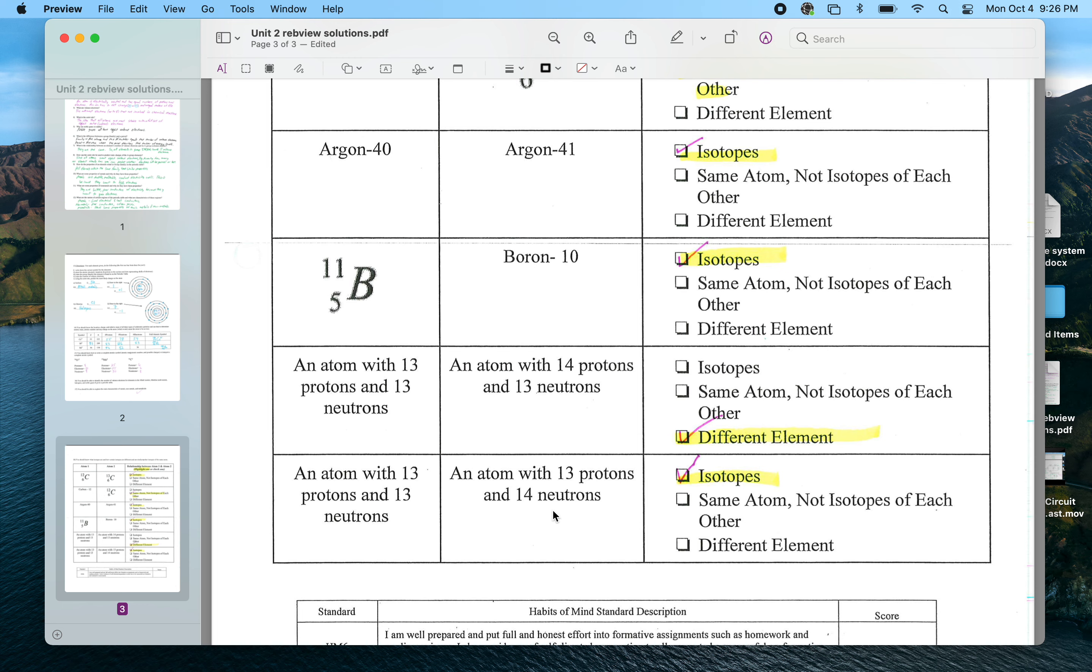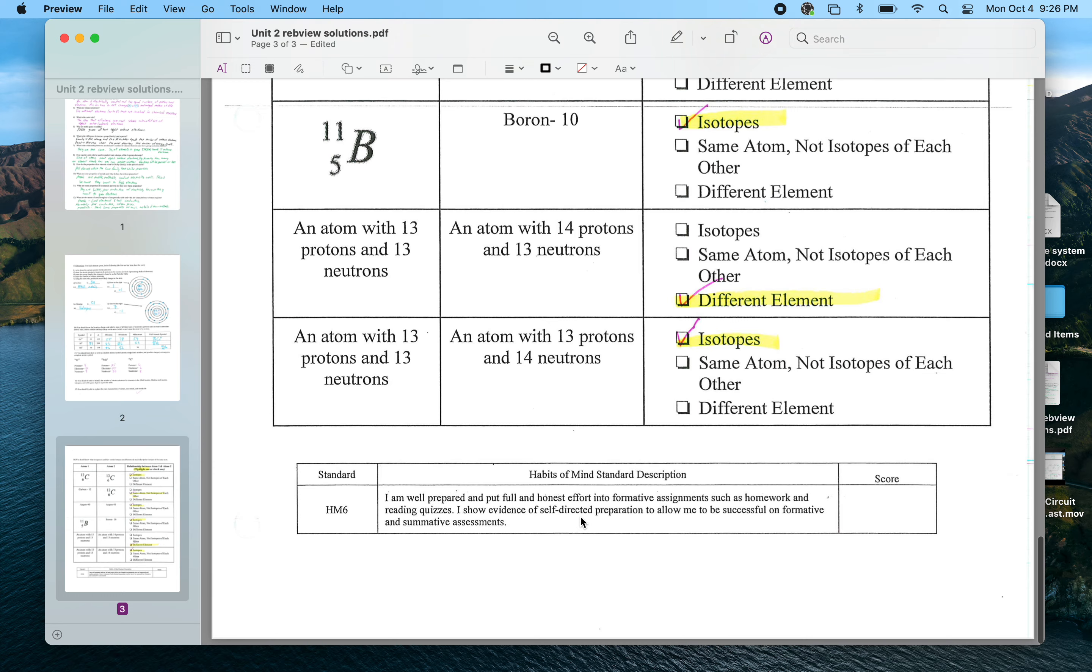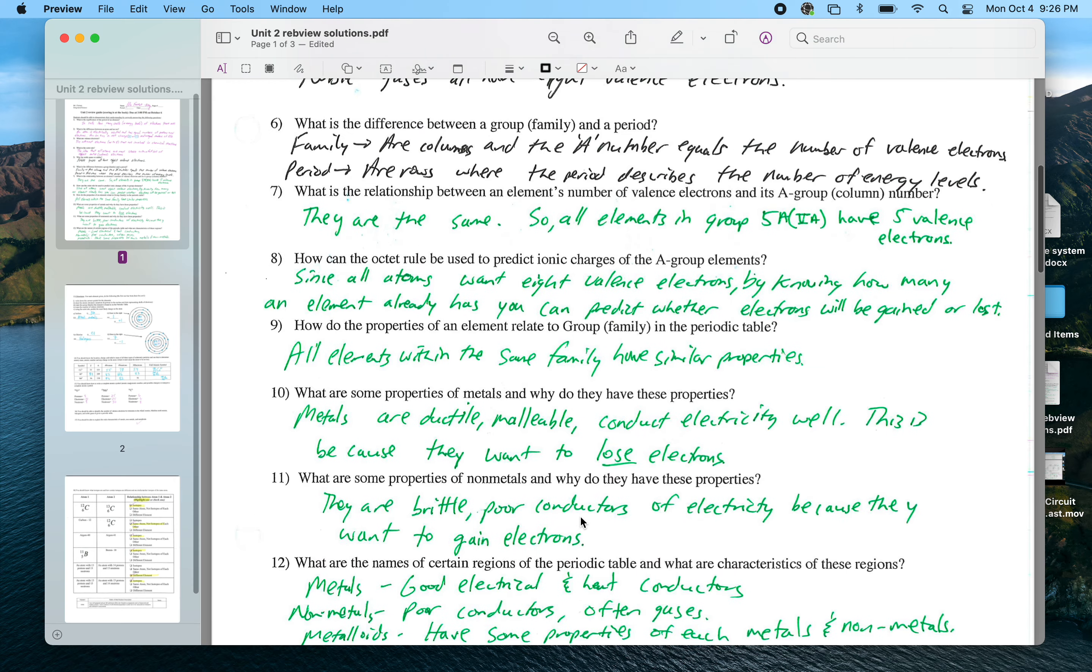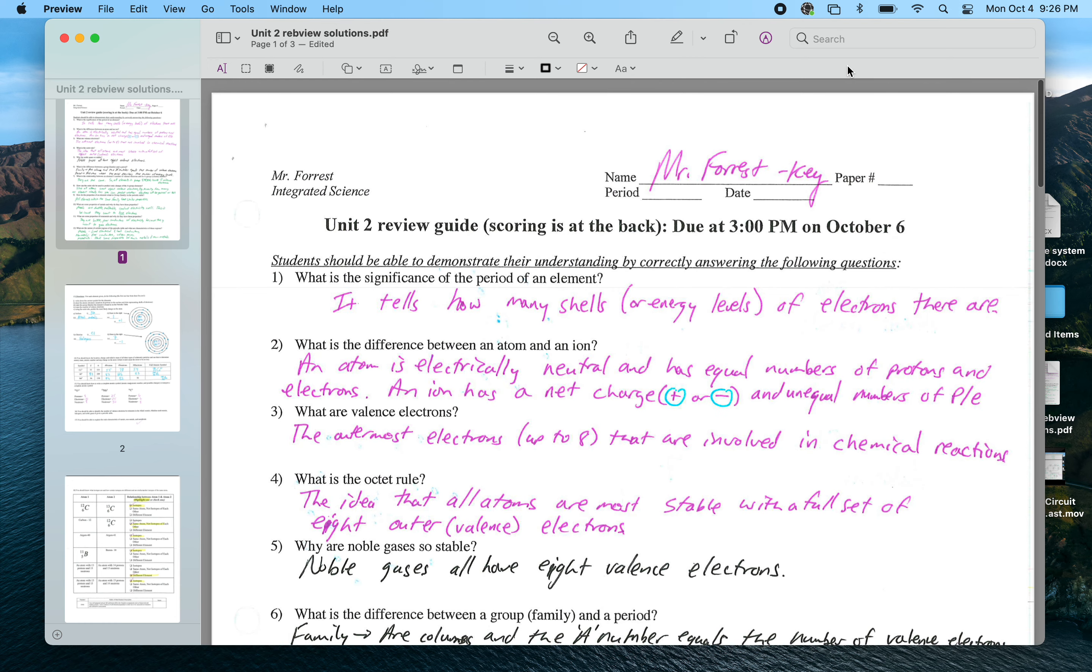This atom with 13 protons and 13 neutrons compared to an atom with 13 protons and 14 neutrons - by definition, the number of protons defines the element, so these are both the same element, but they have different numbers of neutrons, so different masses. And therefore, they are isotopes of each other. These are two isotopes of aluminum. And that's it. So I'll check that - either you turned it in class on Monday, or I'll check it on Tuesday. Hey, someone's sending me a notification. Anyhow, thanks. I hope this helps.